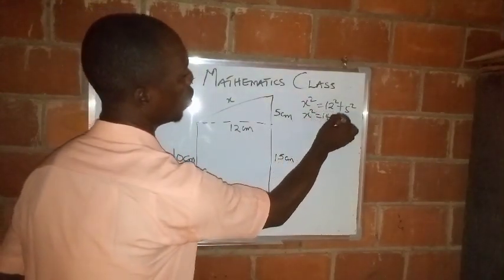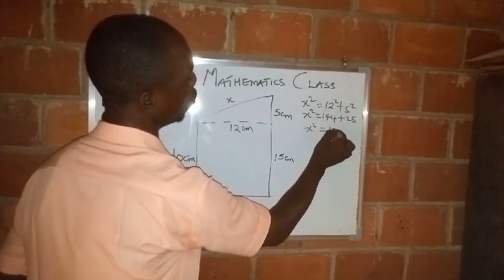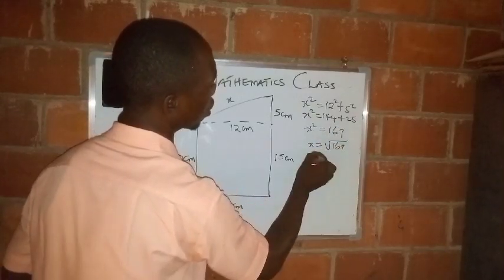So x squared will be 144 plus 25. x squared will be 169, then x will be the square root of 169.